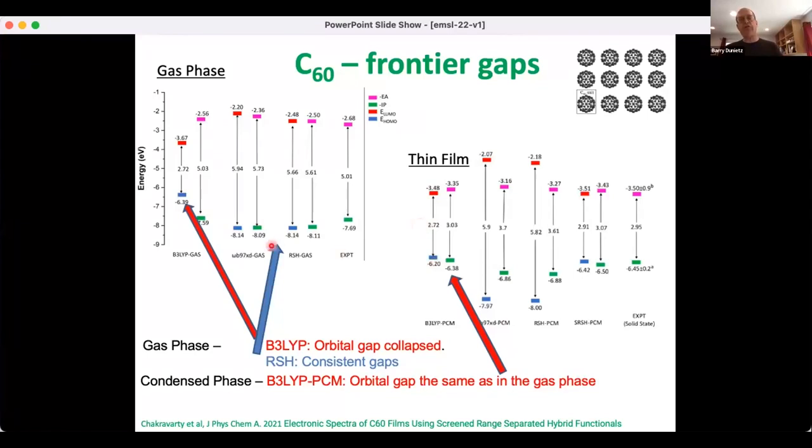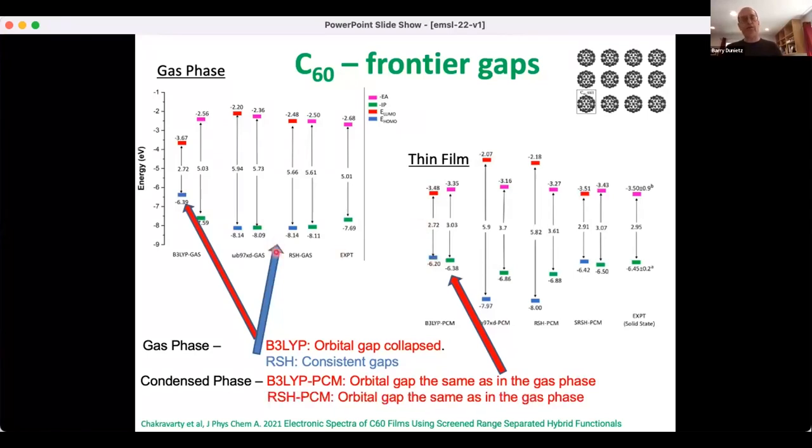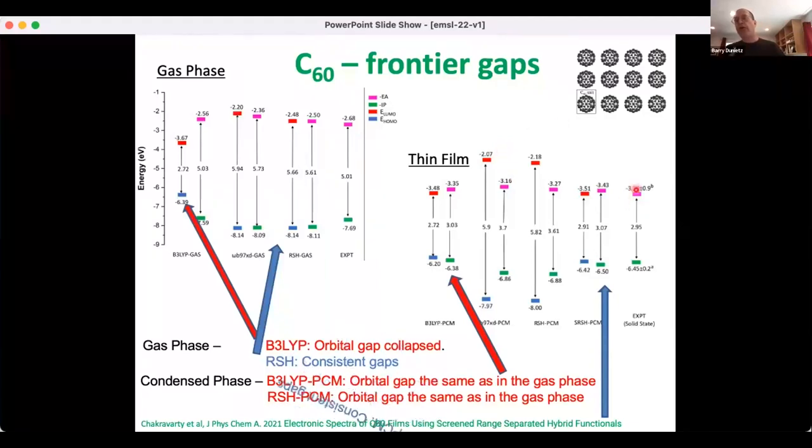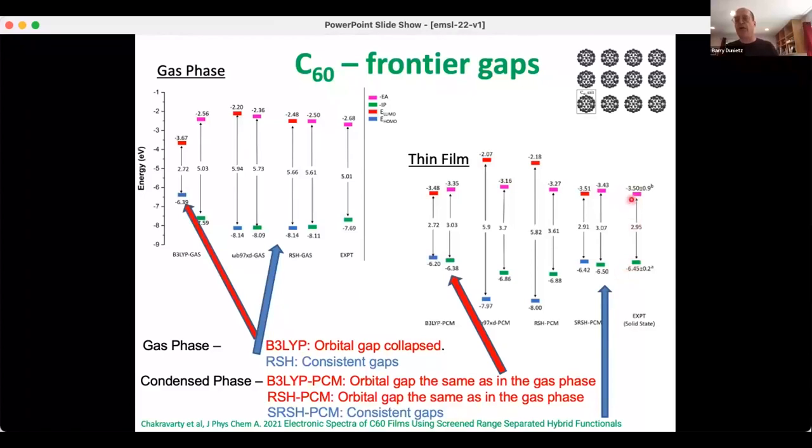Let's use it with RSH. With RSH, however, we have a similar problem as with B3LYP when we turn on PCM. The orbital gap remains open as it should have been in the gas phase. It did not get renormalized to the condensed phase. It's only with that approach of screening the long-range interactions that we find now the gaps to be consistent. In turn, we find them to be also consistent with the measured values, ionization potentials and electron affinities. That's a reason to celebrate and a way to go ahead and calculate excited states.